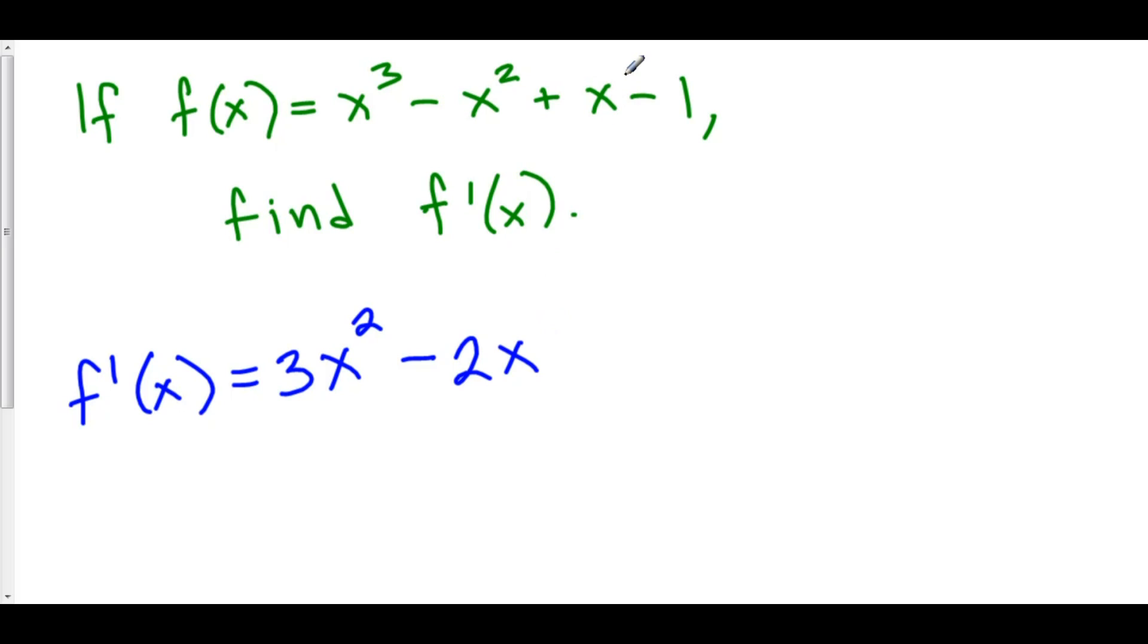The derivative of x, well think about x as having already a power of 1. We'll move that 1 in front, so that's plus 1, and then we subtract 1 from the exponent, so 1 becomes 0, and x to the 0 is just 1. So that goes away. And finally, we can use constant rule for the negative 1. The derivative of any constant is just 0. And so here is our derivative.